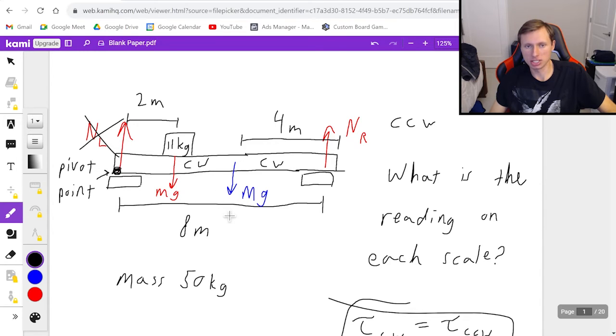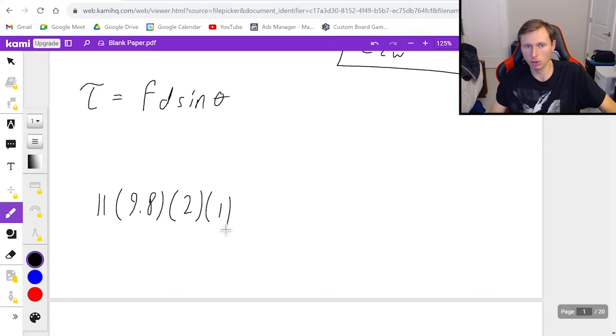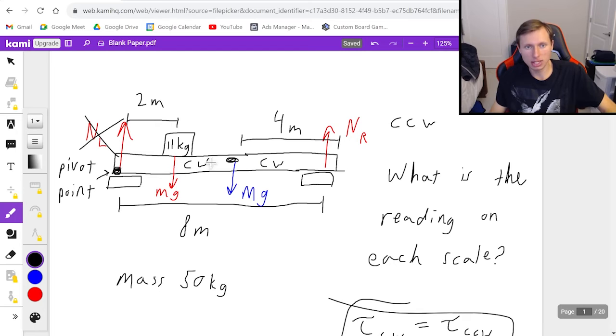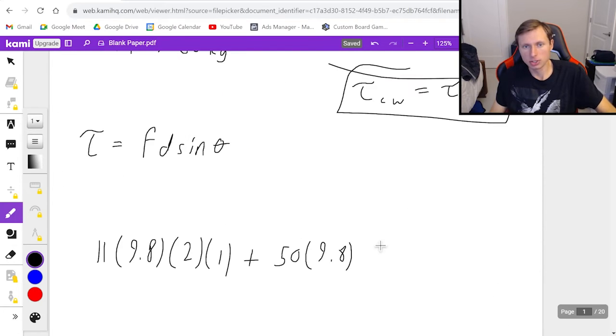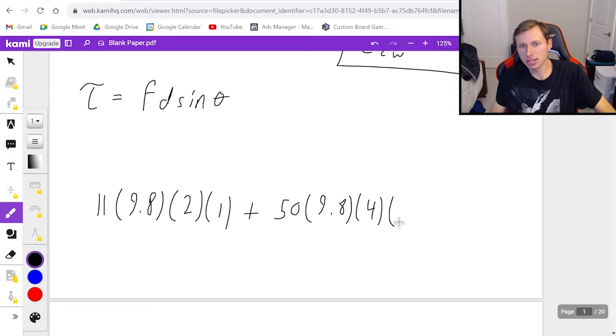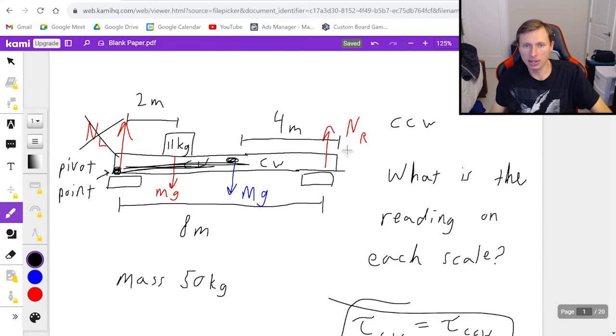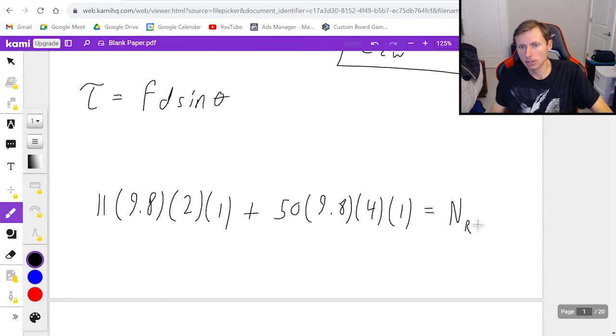First for the mg with the 11 kilograms, it's going to be its mass, which is 11, times g, which is 9.8, times the distance, which is 2 meters. The sine theta is going to be 1 because it's sine of 90, perpendicular to my pivot point. Then I'm going to add the torque from the big mass, the 50 kilogram mass. That's going to be mass 50 times g 9.8 times its distance. That distance is 4. The left side is complete. Now I set it equal to the right side, which is only from NR. That force is NR, the distance is the total 8 meters, and sine theta is 1 again.